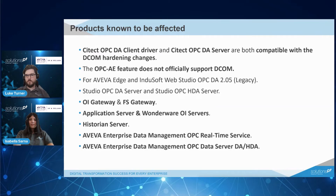Both OI Gateway and FS Gateway can't connect to an OPC data source. This includes if communications originate from both app server and OI servers, as both use DCOM communication with the OPC data source.